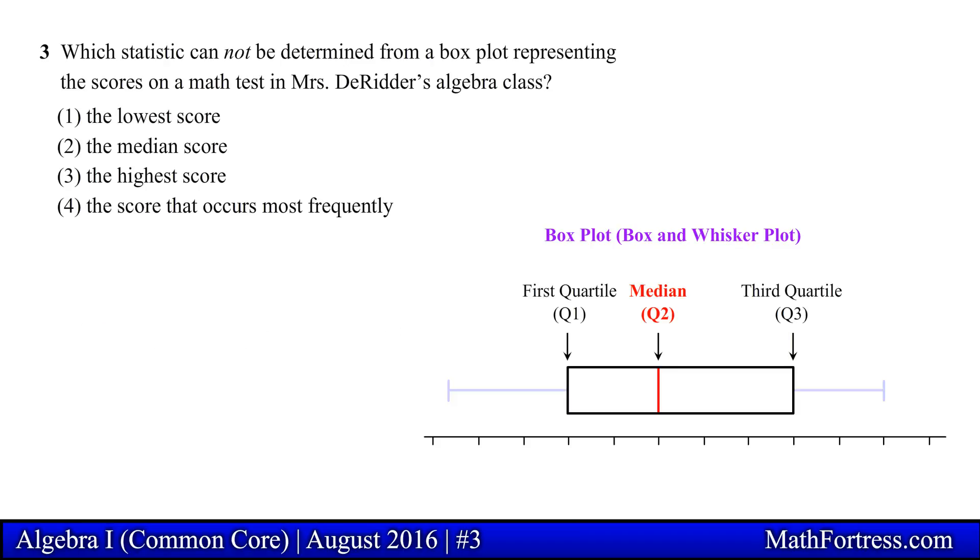In addition to the box, two horizontal lines called whiskers extend from the left and right sides of the box. The left whisker starts from the first quartile Q1 and extends to the smallest or minimum value of the data set. The right whisker starts from the third quartile Q3 and extends to the largest or maximum value of the data set.